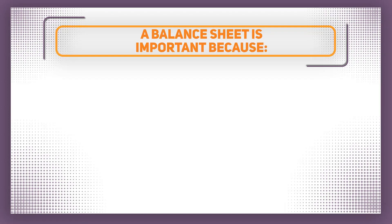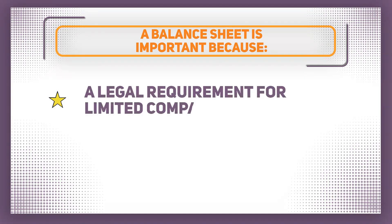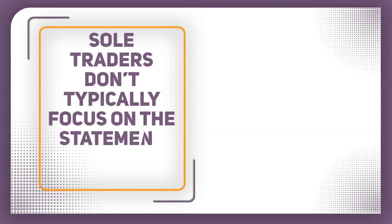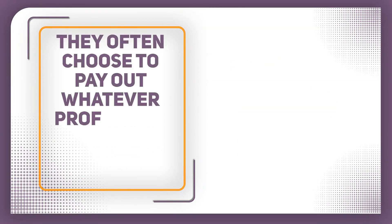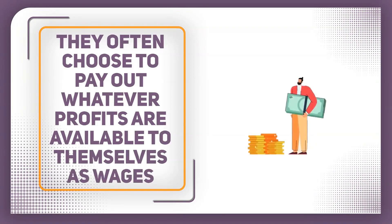Let's take a quick look at why it's so important for Otis to have a statement of financial position for Kart Nation. Limited companies need to file a statement of financial position with Companies House each year as an absolute minimum. A business like Kart Nation is small enough to fall into this category. However, depending on their turnover, bigger businesses may also need to file an income and a cash flow statement too. Unlike limited companies such as Kart Nation, sole traders don't typically focus on the statement of financial position — firstly because they are not legally required to produce one, but also because they often choose to pay out whatever profits are available to themselves as wages.